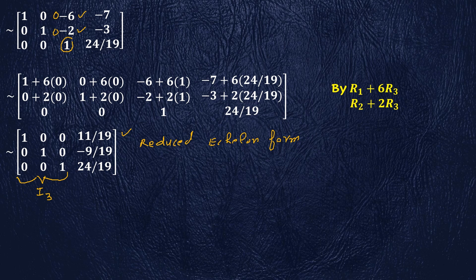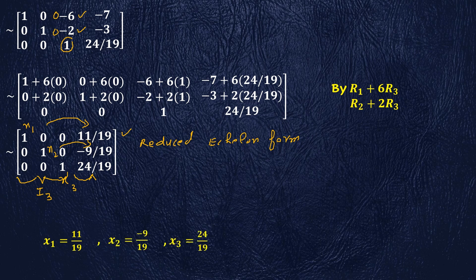Now we write the solution of this system of linear equations. From row 1 we get x1 = 11/19, from row 2 x2 = -9/19, and from row 3 x3 = 24/19. Therefore by the Gauss-Jordan method we have found the solution of the given system of linear equations: x1 = 11/19, x2 = -9/19, and x3 = 24/19.